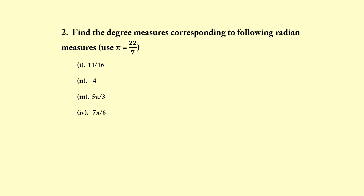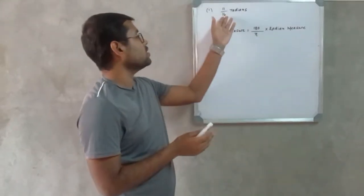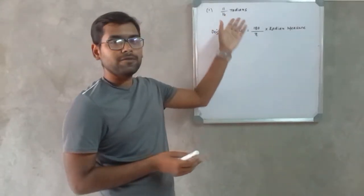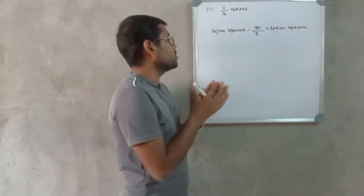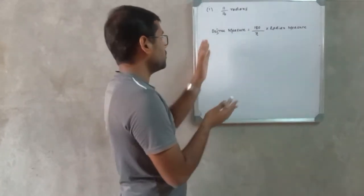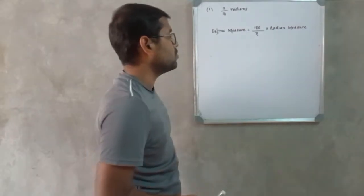Find the degree measures corresponding to the following radian measures: first, 11/16 radians; second, minus 4 radians; third, 5π/3 radians; and fourth, 7π/6 radians. You can use the value of π as 22/7. Here in this question, they have given us the angle in radian measure and we need to convert that radian measure into degree measure. For that, we have the simple formula: degree measure = (180°/π) × radian measure.